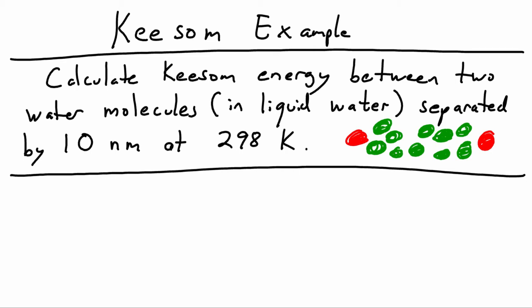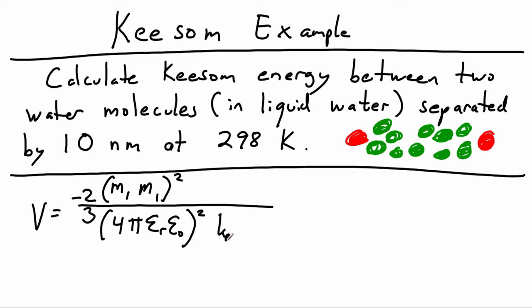Let's use the Keesom potential. The Keesom potential is negative two-thirds the dipole moment of one molecule times the dipole moment of the other molecule, squared. The two water molecules have the same dipole moment. Then we have the collection of dielectric constants—vacuum permittivity and the dielectric constant of the solvent separating the molecules—then thermal energy and the distance separating the two molecules to the sixth.